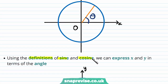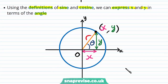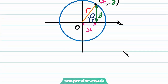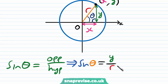Using the definitions of sine and cosine we can express x and y in terms of the angle. For a general point on the circle with coordinates (x, y), the value of x and y are shown relative to the radius r. We can use right-angle trigonometry since we have a right-angle triangle. The sine of theta equals the opposite divided by the hypotenuse, giving us sine theta equals y divided by r. Rearranging, we get y is equal to r sine theta.